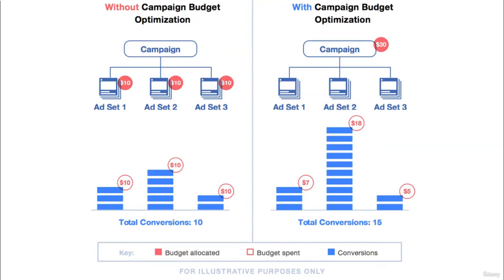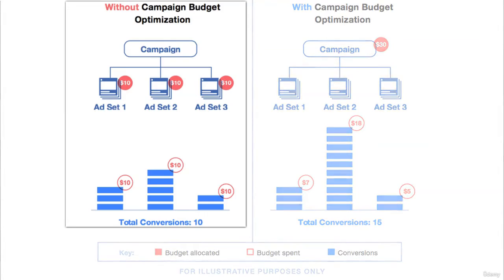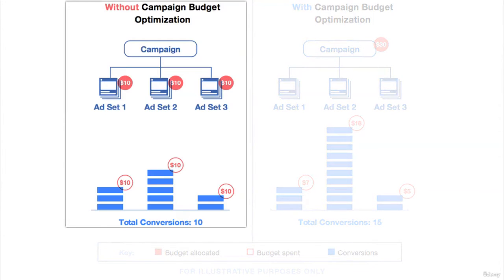On the right screen, we can see another campaign structure that is set on campaign budget optimization. This campaign also has the same three ad sets, but the budget of $30 is set at the campaign level, not at the ad set level.